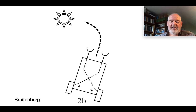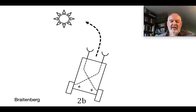Simple A-life agent: Braitenberg Vehicle 2B. Two photoreceptors at the front, two wheels at the back. The brain is limited to just those two diagonally crossed wires, such that when there's more light in the left photoreceptor the right wheel goes faster than the left, and hence the vehicle will turn towards the light. If you carry the light around, the vehicle will follow you. The light matters to the vehicle just as the gap matters to the sheep.